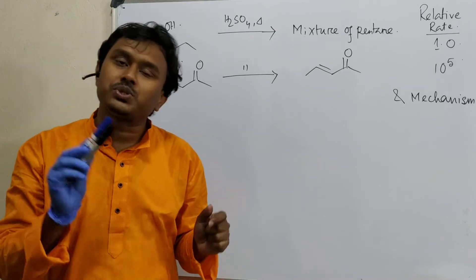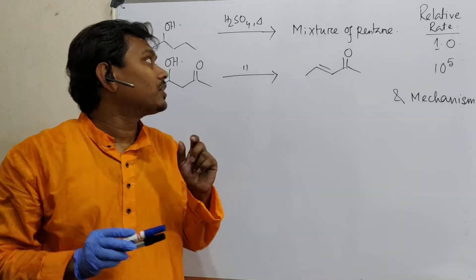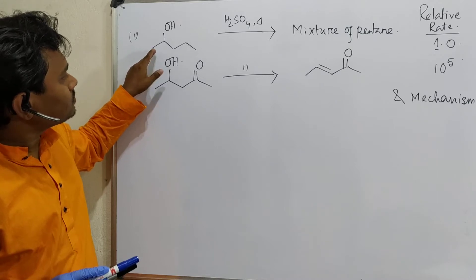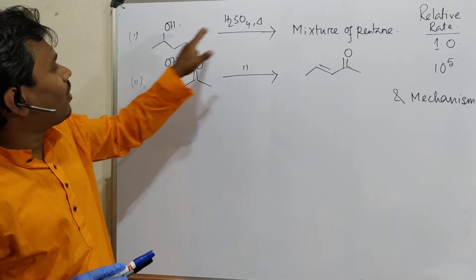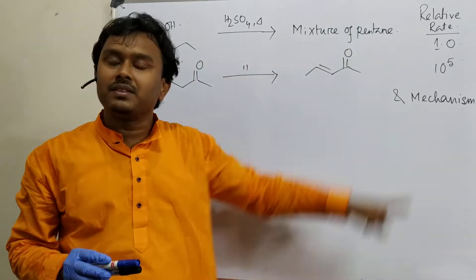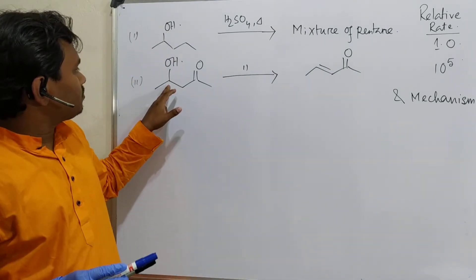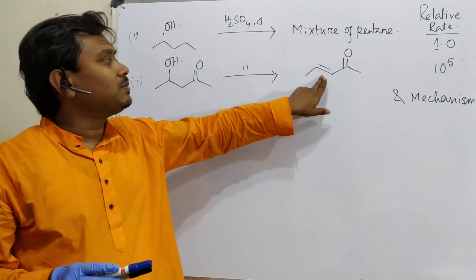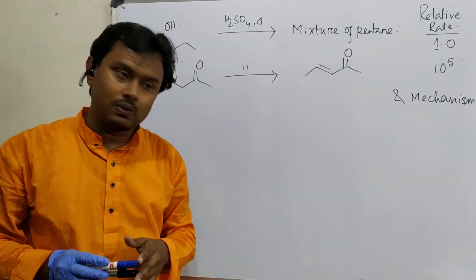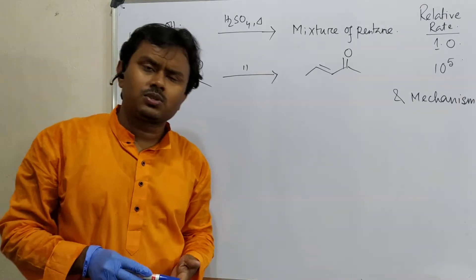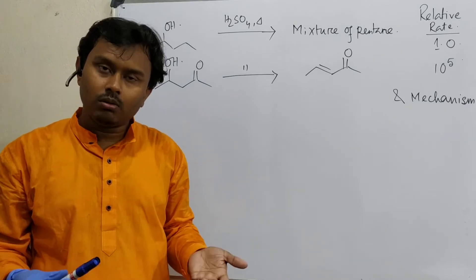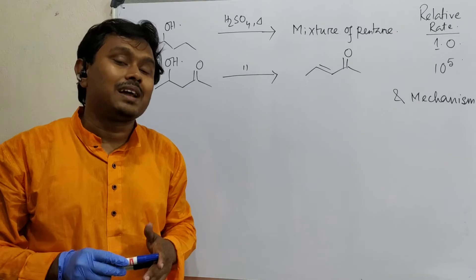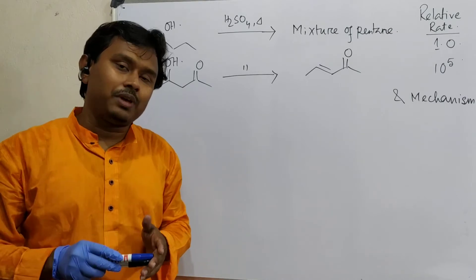I suggest you stay at home and follow the instruction given by the government. It is not always easy to study, but entertainment and study should be mixed properly such that you don't feel bored. Today we will discuss a question. If you heat this pentanol alcohol, you get a mixture of pentenes. But if you take this beta-hydroxy ketone, you will get selectively alpha-beta-unsaturated carbonyl compound.